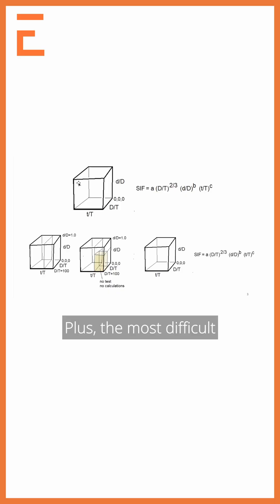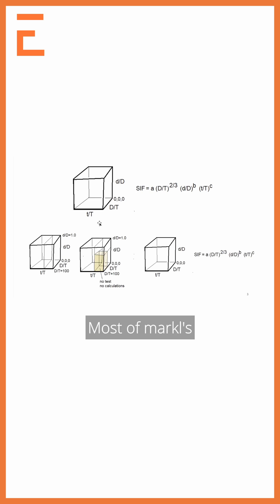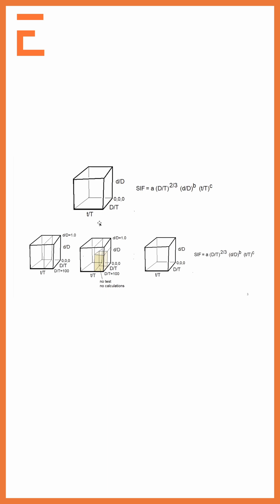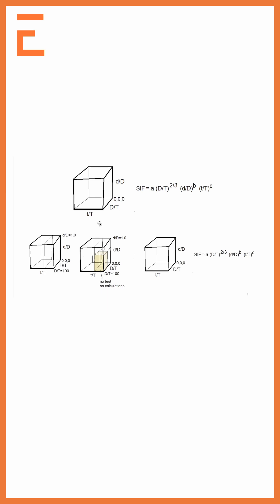The most difficult thing in the original development of B31J was all of the sizes, because all of the sizes hadn't been covered. Most of Markl's tests were done on 4-inch size-on-size fittings. Well, 4-inch size-on-size fittings have a D over T of around 20, but the largest D over T is 100.